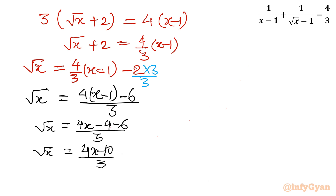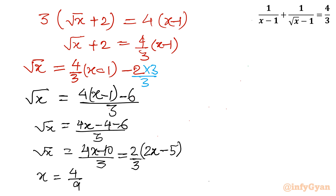I can take 2 common from the numerator, so root x equals 2(2x minus 5) over 3. The left-hand side has a square root and the right-hand side does not, so I will square both sides. This gives x equals (4 over 9) times (2x minus 5) squared.